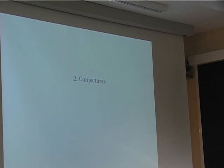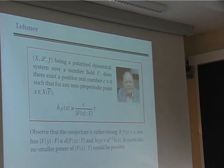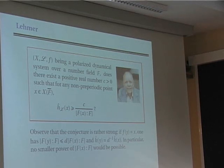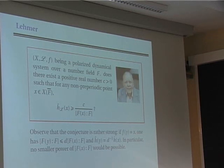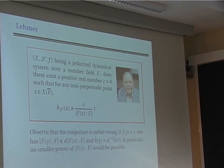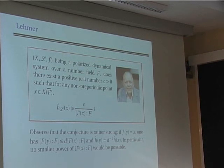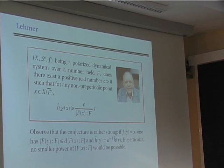This finishes the first part of the talk, which was the description of the height machine that one can play with when one has a dynamical system. The second part of the talk is devoted to conjectures. I have put names on almost all of the conjectures — these names are not necessarily accurate in attributing who conjectured what, but all of these statements are inspired by conjectures of the named people.